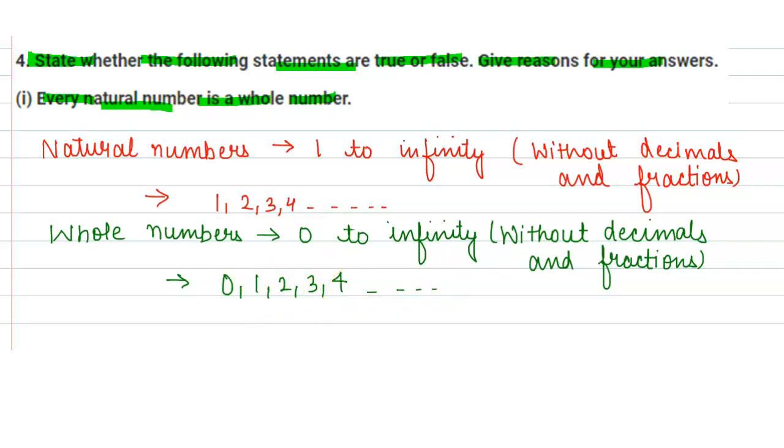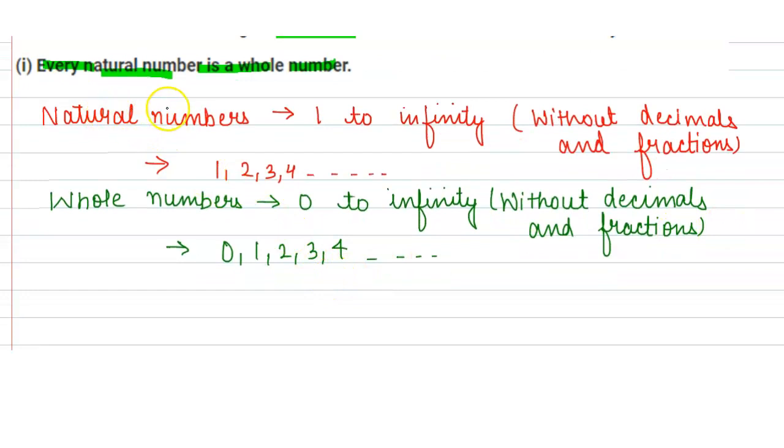Now if we look at the statement: every natural number is a whole number. Natural numbers have one, two, three, four and so on. Also whole numbers have one, two, three, four and so on. Therefore, every natural number is a whole number.